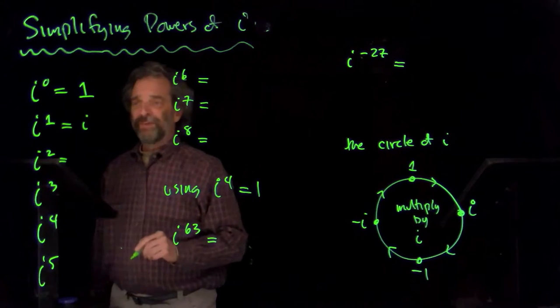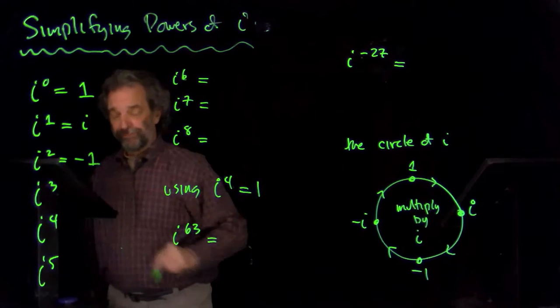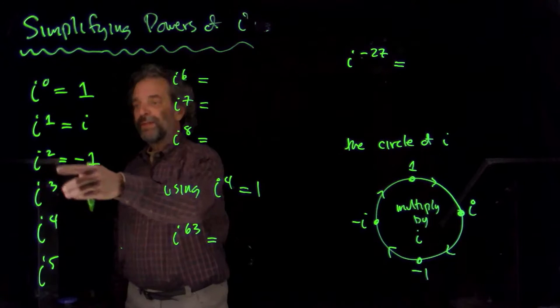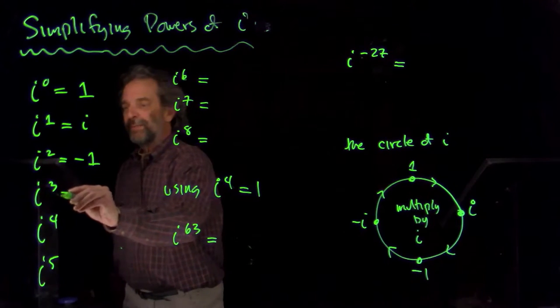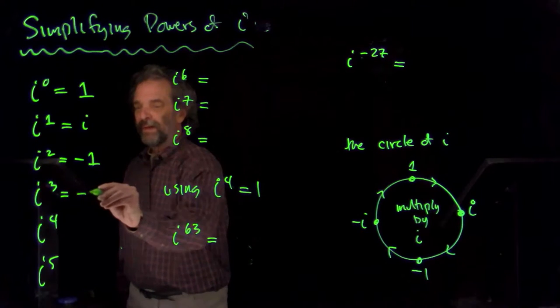And then i squared is i times i. And i squared is minus one. We already know that. And as we move down this list, each time I increase the exponent by one, I'm multiplying by an extra factor of i. So, i cubed is minus one times i. That's minus i.